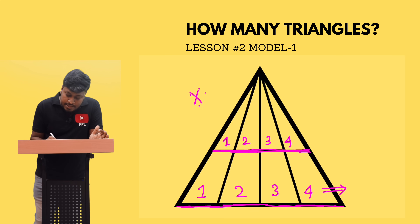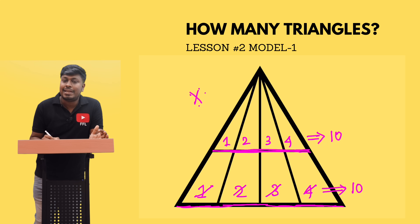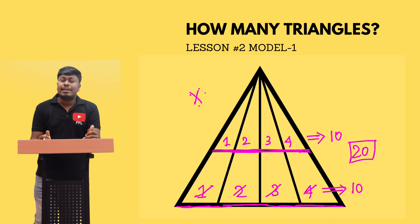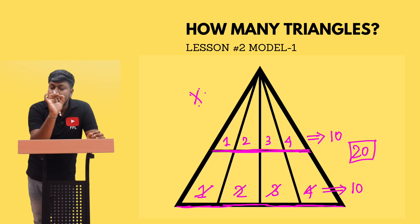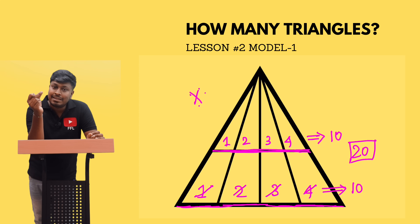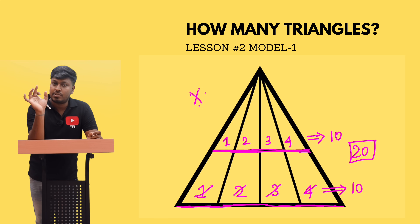Now add the numbers for the bottom baseline: 1+2+3+4 = 10. Similarly for the top baseline: 1+2+3+4 = 10. Then 10 plus 10 equals 20. So there are 20 triangles in the given figure. Remember: for each baseline, start a new number series from one. Never continue numbering across different baselines — that is the most common mistake students make.